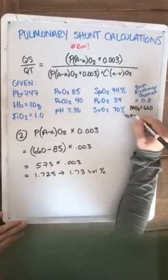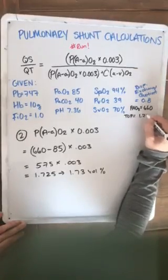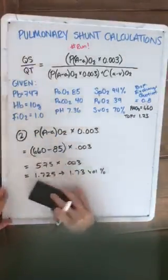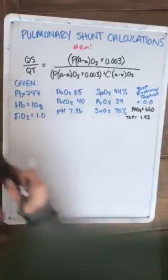I'm just going to write top as equivalent to 1.73 up here so we remember. Moving on to step 3.